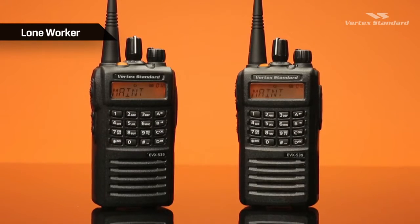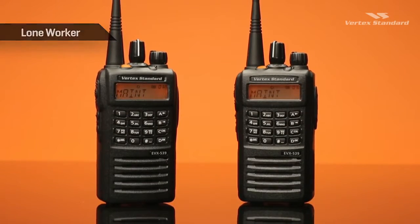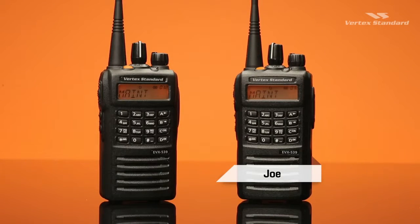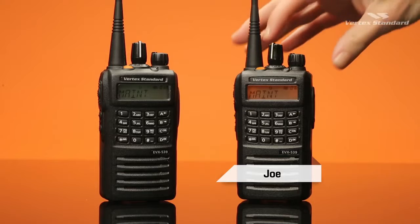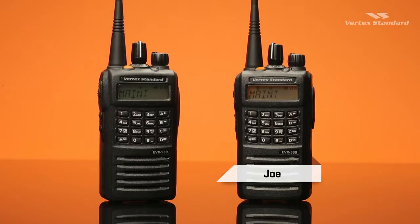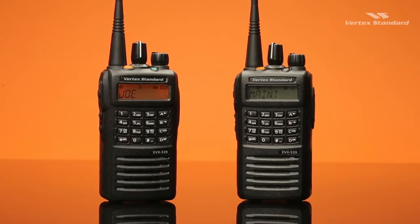The Loan Worker function allows supervisors to monitor the safety status of isolated workers working alone in risky areas. In this example, Loan Worker is activated by pressing a pre-programmed button. Every 5 minutes, the user is reminded to check in, which is done by pressing the PTT button. That sends a notification of the radio ID to the receiving radio.